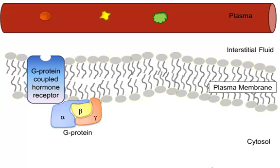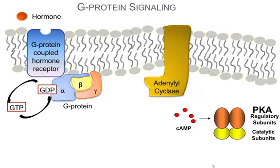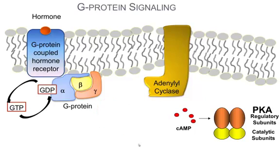Let's take a closer look at how G-protein signaling mechanisms work. Hormones floating through the bloodstream may circulate freely or may be complexed with binding proteins. In the bloodstream, the hormone dissociates from any associated binding proteins and moves out of the capillary and into the interstitial fluid. The hormone then binds to a hormone receptor in the plasma membrane of a target cell. The hormone receptor is associated with the G-protein, which is attached to the cytoplasmic side of the plasma membrane. The G-protein relays hormonal information to downstream signaling pathways and can be coupled to enzymes or ion channels in the plasma membrane.